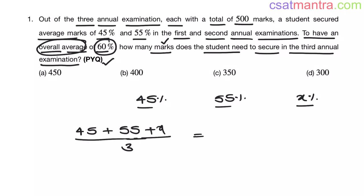Percentage on both sides cancels out. Now, 45 plus 55 is 100. 100 plus X equals 3 times 60, which is 180. So X equals 80.